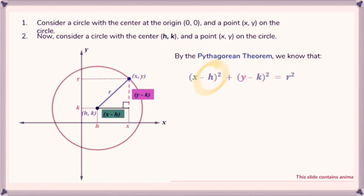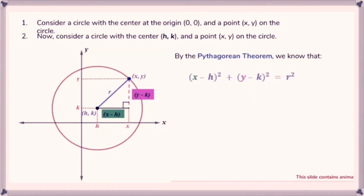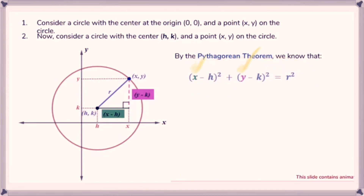You'll want to have memorized the standard equation of a circle: (x - h)² + (y - k)² = r². Here, h and k represent the center of the circle, r is the radius — written as r² in the equation — and x and y are coordinate points on the circumference of the circle.